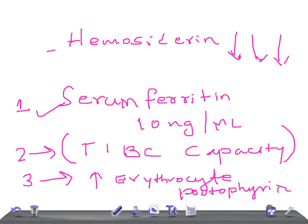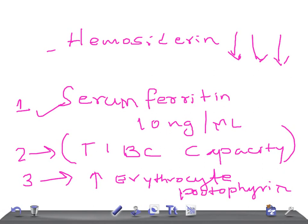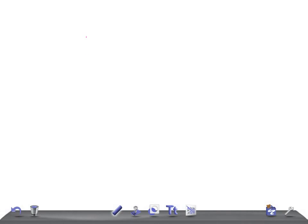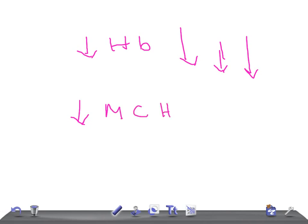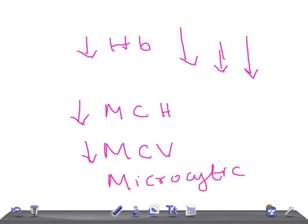If the patient still has iron deficiency anemia, the next change is that the hemoglobin level will go down. After that, the MCH level is lowered, followed by a decrease in MCV, and finally you see what is called microcytic hypochromic anemia.